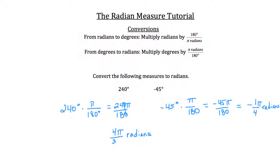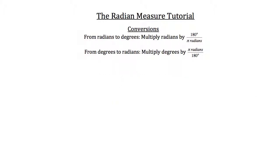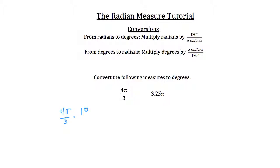Now let's go from radians to degrees using the reciprocal formula, multiplying by 180 over π. For 4π over 3 radians, we multiply by 180 degrees over π. So 4 times 180 is 720, giving us 720π over 3π. The π's cancel, and 720 divided by 3 is 240 degrees. So 4π over 3 radians equals 240 degrees.